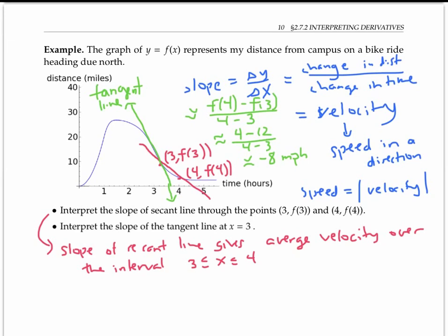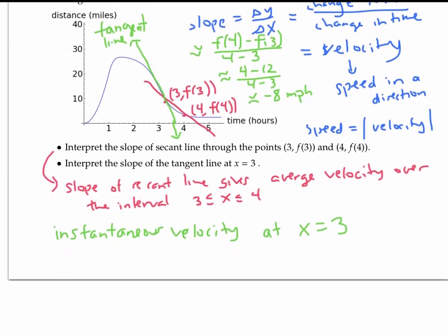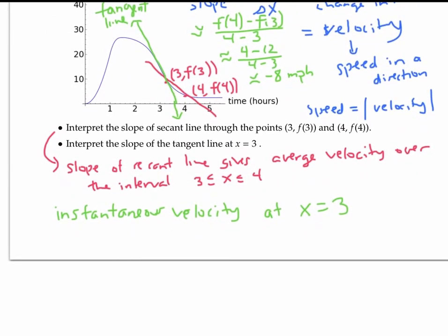The velocity at an exact instant of time is sometimes called the instantaneous velocity to distinguish it from the average velocity over a time interval. Let's think for a minute about why the velocity at exactly three hours is given by the slope of the tangent line.